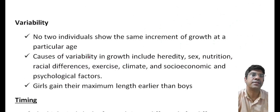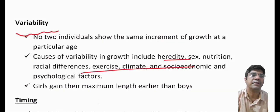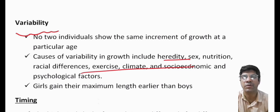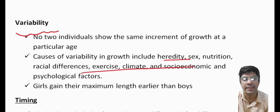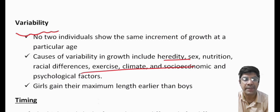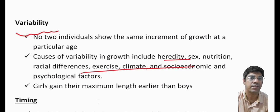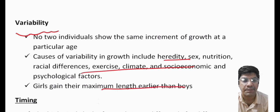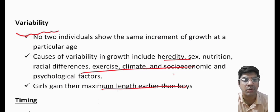The second basic feature of growth is variability — no two individuals exhibit the same type of growth pattern. Factors contributing to growth variability include hereditary factors, sex, nutrition, exercise, and climate. Girls typically reach their maximum length earlier than boys. The timing of growth events can vary among individuals and is influenced by factors like sex, with girls typically entering puberty earlier than boys. Understanding the timing of growth is important when planning growth modification.